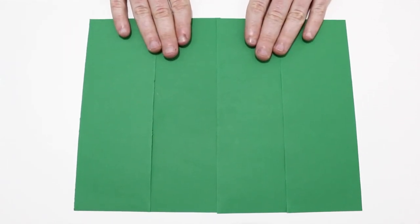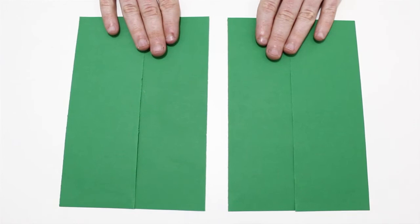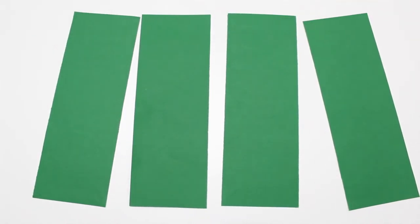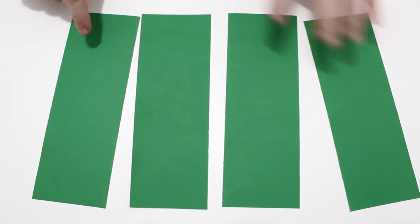Ahora vamos con el tercer tipo que es una ramita con hojas. Para ello vamos a coger un folio y lo vamos a partir por la mitad de esta forma. Y otra vez por la mitad. Entonces tendremos un folio en cuatro partes.